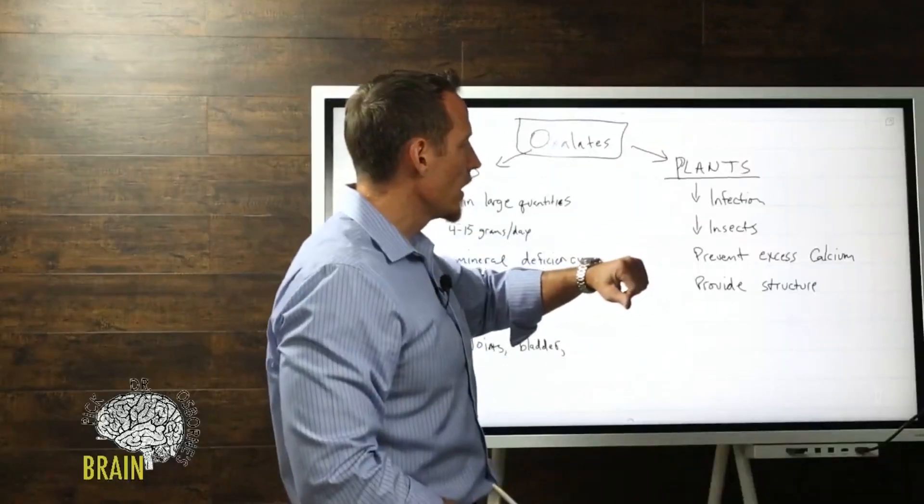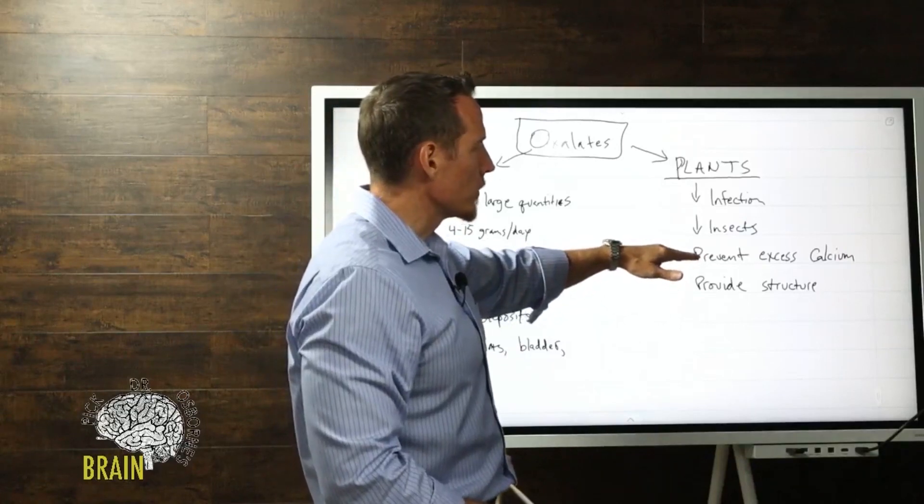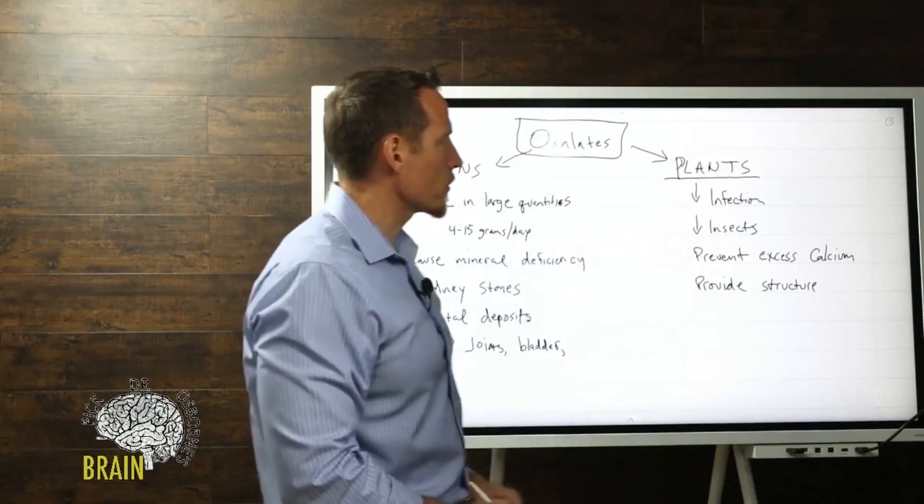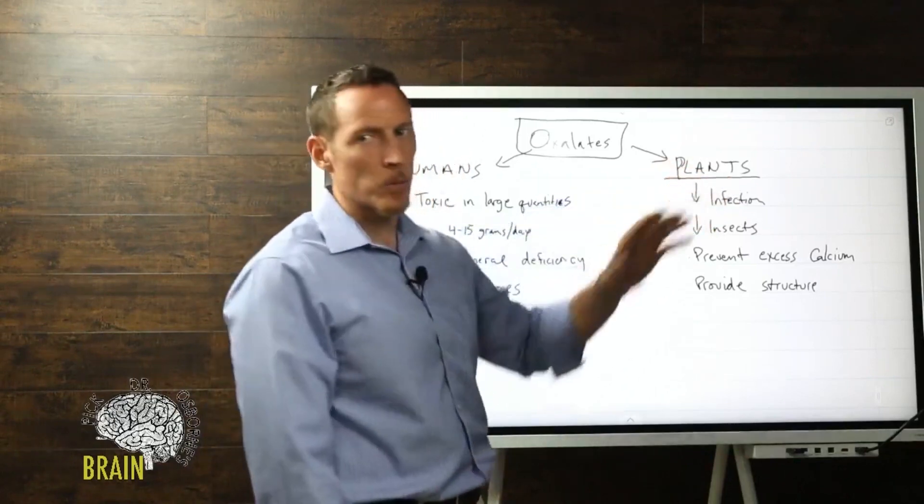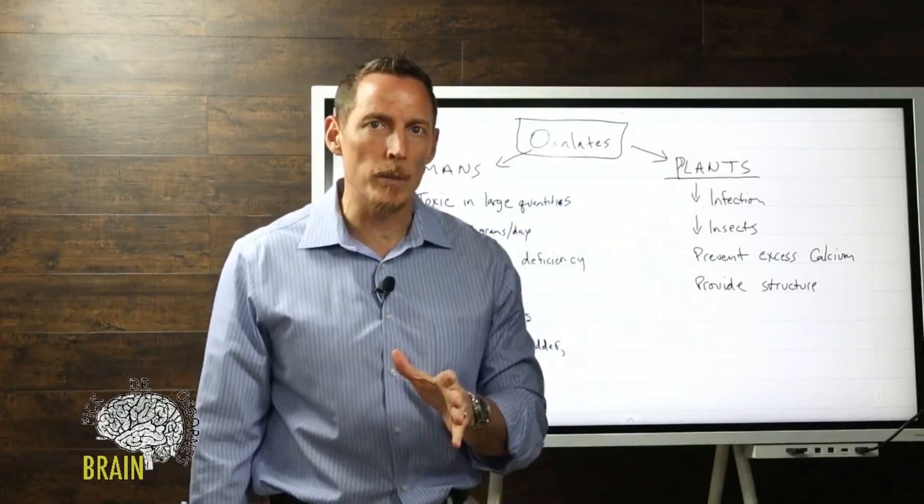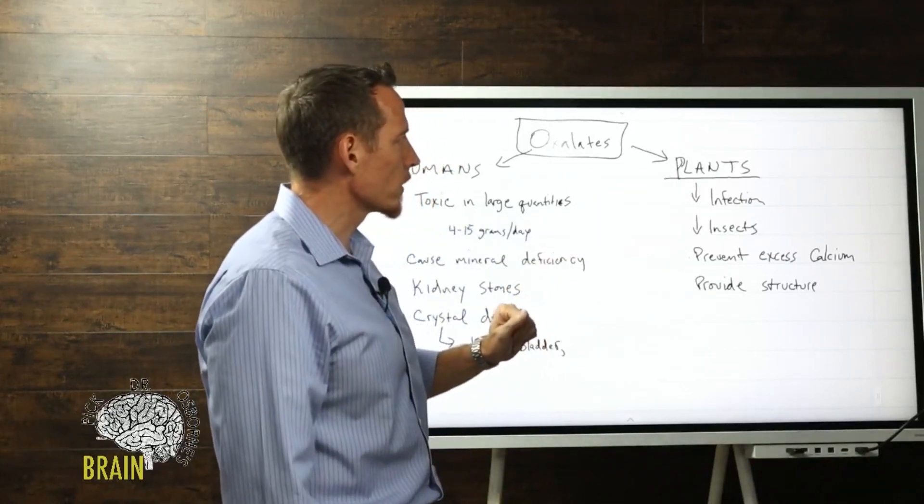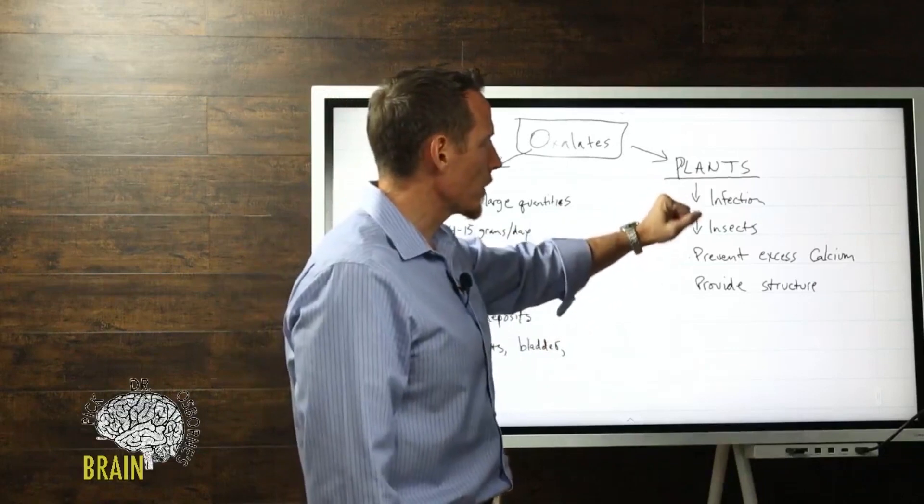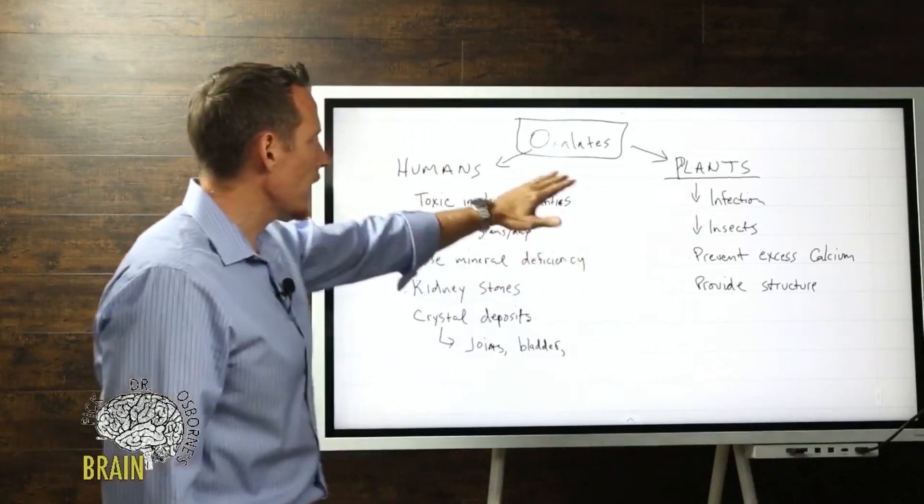These are compounds found naturally in plants, and we'll talk about some of those plants shortly. One of the highest oxalate-containing plants that many people in my opinion over-consume is spinach, and we'll talk about why shortly. So stay with me, we're going to get to it.